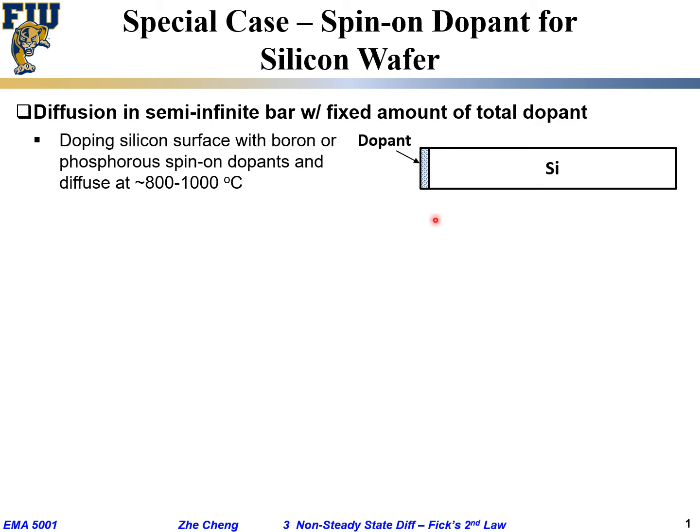You put a so-called dopant glass — a spin-on coating — onto the silicon, dry it, and remove the solvent. You then have essentially a glass containing a high concentration of either boron or phosphorus. When you raise the temperature, that boron or phosphorus will diffuse into the silicon. That's how people form the so-called p-n junction, which is very important for silicon-based semiconductors.